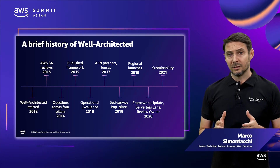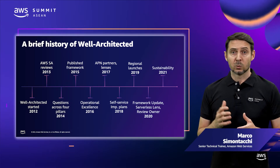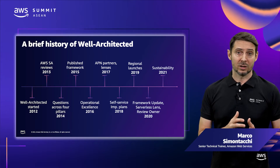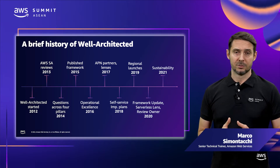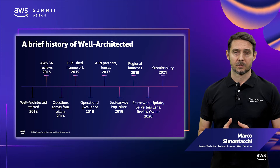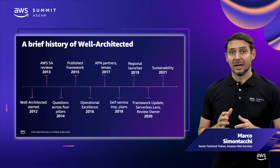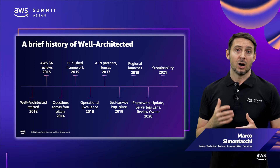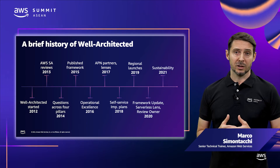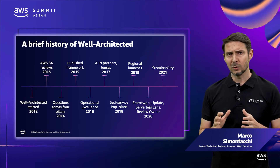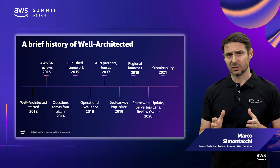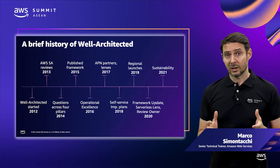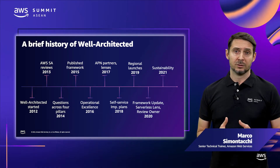In 2019, the AWS Well-Architected tool and the Well-Architected Partner Program expanded into multiple regions. In 2020, AWS announced the availability of a new version of the Well-Architected Framework. AWS made changes in response to customer feedback, as well as to industry trends that are becoming widely adopted.